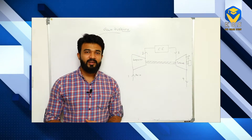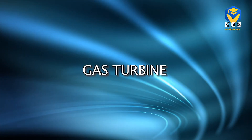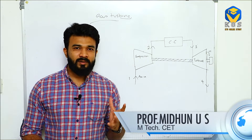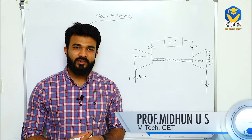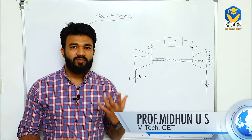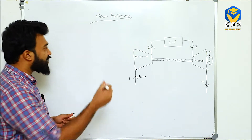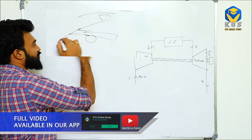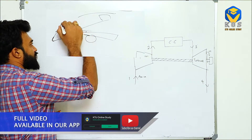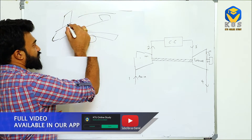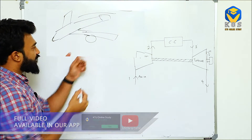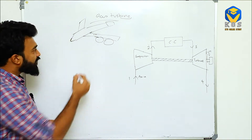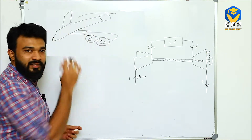Our new topic is Gas Turbine. If you observe a flight, you can see two cylindrical shapes of objects attached to the wings. These two cylindrical shapes are the engines. This is what we call a gas turbine.